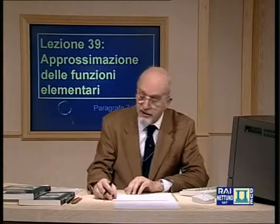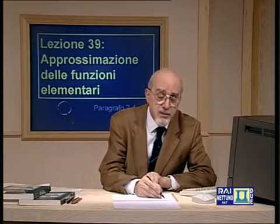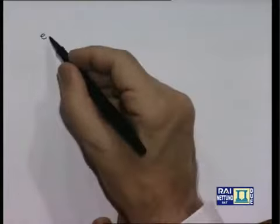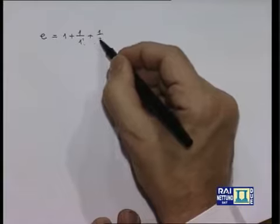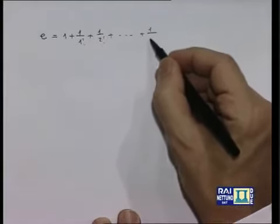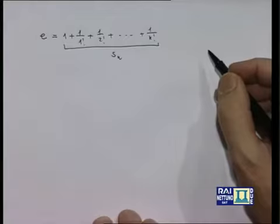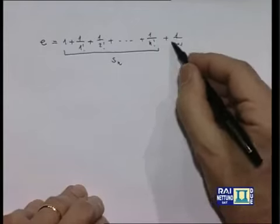Vediamo come si possono utilizzare questi sviluppi in serie per stimare in modo approssimato funzioni elementari o valori particolari. Si è già detto che lo sviluppo di e^x per x=1 fornisce e = 1 + 1/1! + 1/2! + ··· + 1/n!, che è la somma parziale ennesima della serie esponenziale scritta per x=1, più il resto 1/(n+1)! + ···.